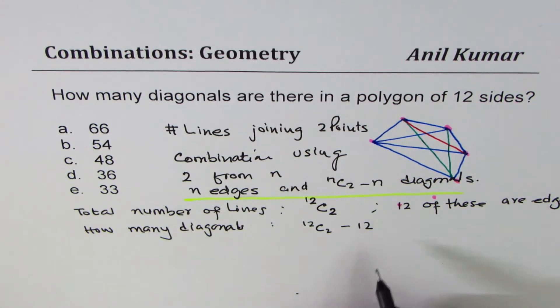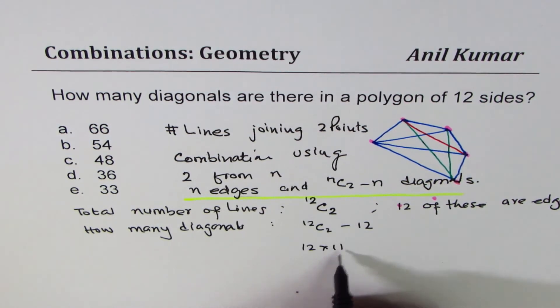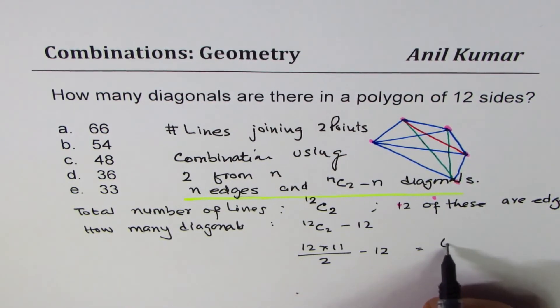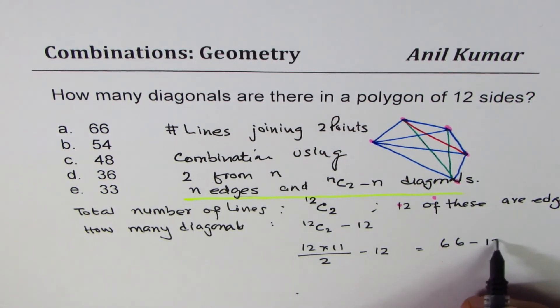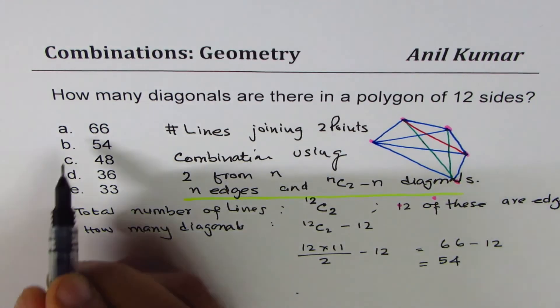So 12C2 minus 12. 12C2 will be 12 times 11 divided by 2 minus 12, correct? So that gives us 66. 12 divided by 2 is 6, so 66 minus 12, and that is 54. So we have done this without calculator.